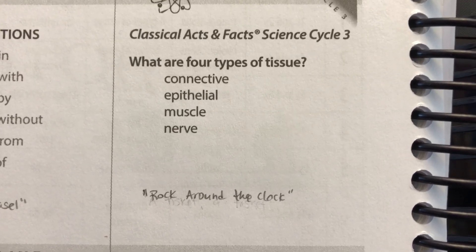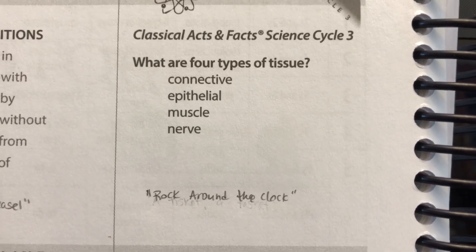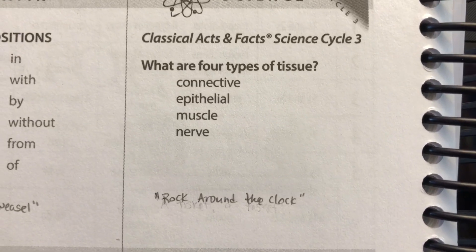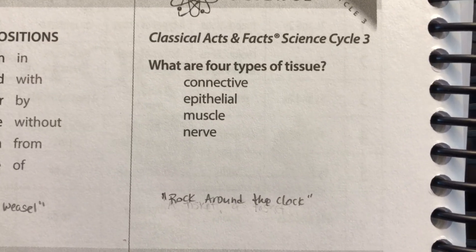What are four types of tissue? Connective, epithelial, muscle, and nerve.